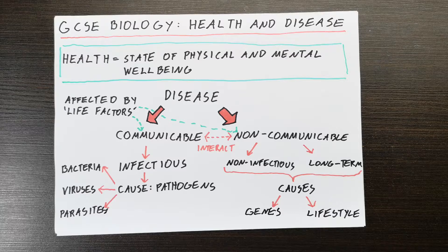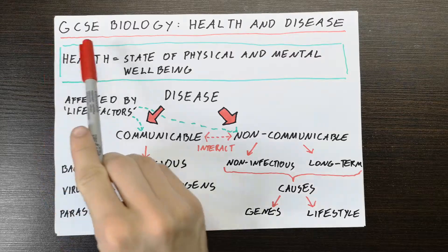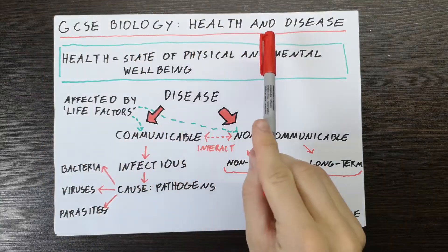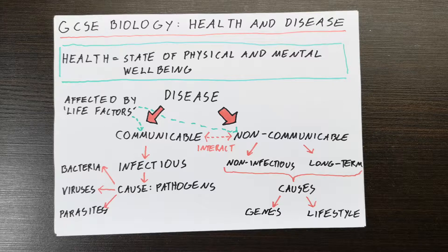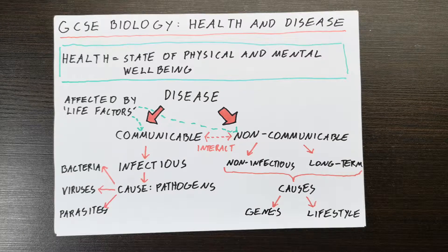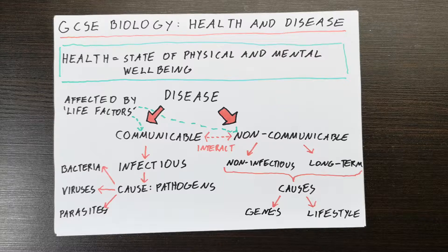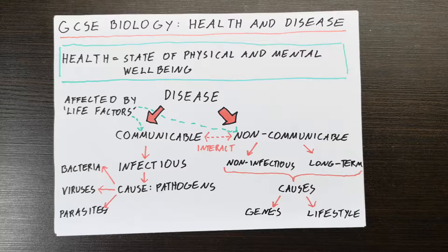Hello everyone, my name is Hubert and welcome to Teach Me Channel. Today we'll be looking at GCSE Biology, Health and Disease. We'll be looking at what health means, what disease means, and what types of diseases there are — the two main types: communicable diseases and non-communicable diseases — and how they all work together, because this is very important.